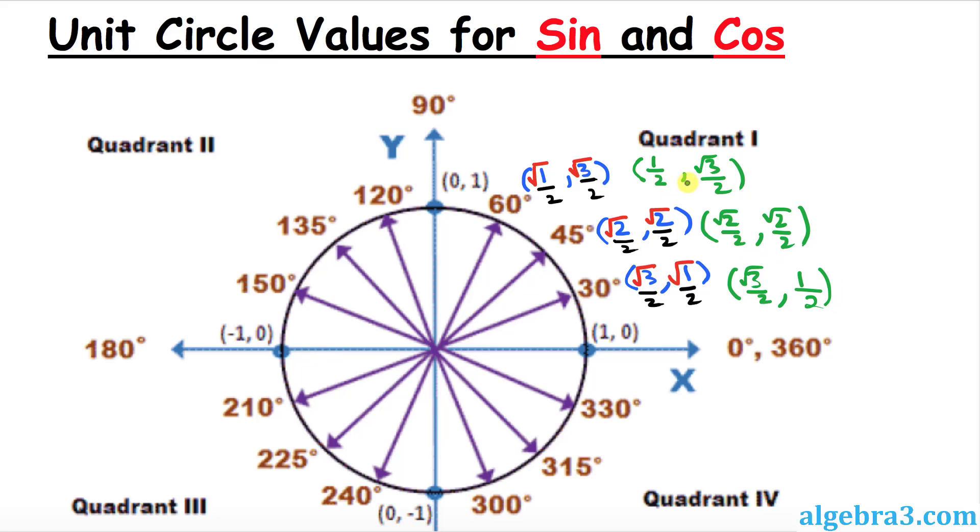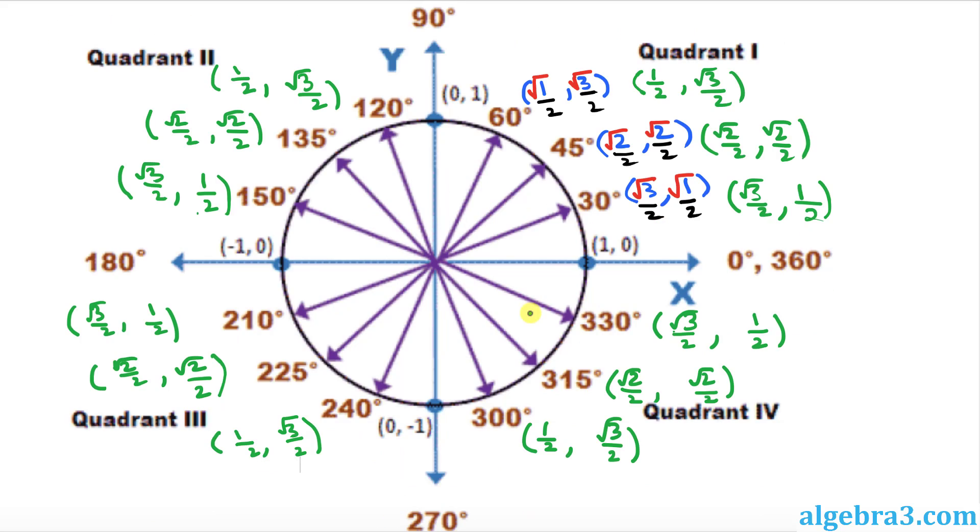So we filled out these values for the very first quadrant. We are going to simply copy down all these values exactly the same way on quadrant 2, 3, and 4. I want you to pause the video and see if you can do it on your own. As you can see, I have filled out the 2nd, 3rd, and 4th quadrant by simply copying and pasting those values on the other side.